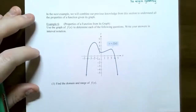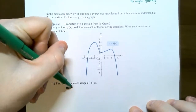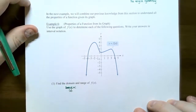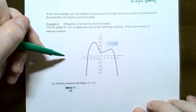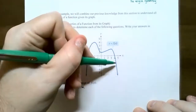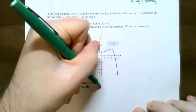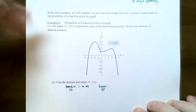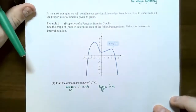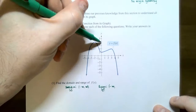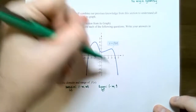Number one: find the domain and the range from the graph. The domain includes all the x values that make up the graph — the input values. The graph has an arrow on the far left, so it goes to the left forever toward negative infinity. The far right end also has an arrow with no gaps in x values, so it goes to positive infinity. The domain is (−∞, ∞). The range is all the y values. The graph goes down forever — negative infinity — and its highest y value is 4, which is included as a closed point. So the range is (−∞, 4].